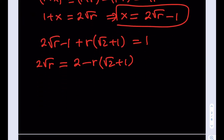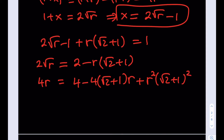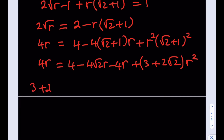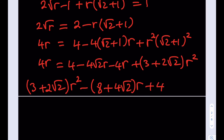Squaring both sides gives 4r = 4 − 4(√2+1)r + r²(√2+1)². Since (√2+1)² = 3 + 2√2, we distribute and collect terms: (3+2√2)r² − 4√2·r − 4r − 4r = 0, which simplifies to (3+2√2)r² − (8+4√2)r + 4 = 0.